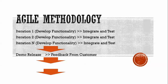Once all the iterations are completed and tested, it goes to a demo release. The demo version of the application is published and given to the customer — the product owner, the restaurant owner. The customer provides feedback, saying things like: the contact us page should be better, there should be a contact form, users should be able to book a table. Developers then adjust the changes in a new iteration, and testers test those changes.